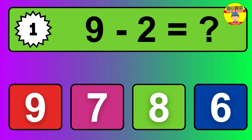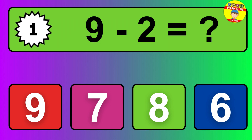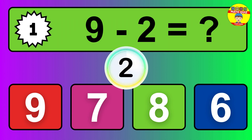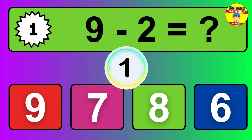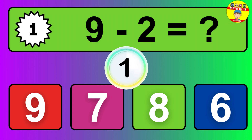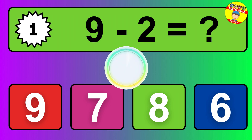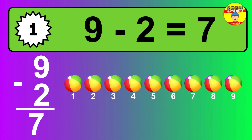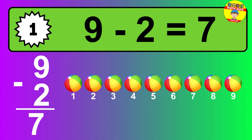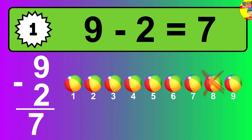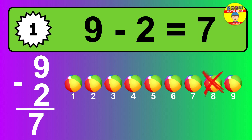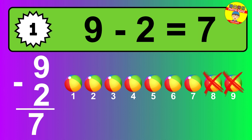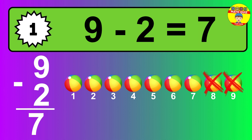Question 1. 9 minus 2 equals what? The answer is 9 minus 2 is 7. Let's count it: 1, 2, 3, 4, 5, 6, 7.